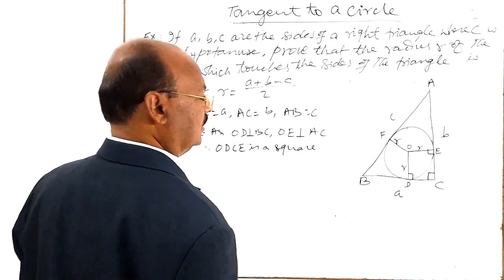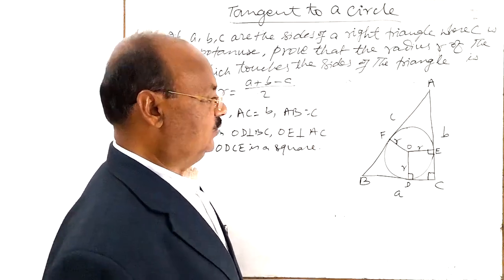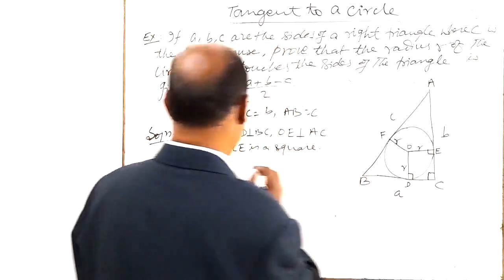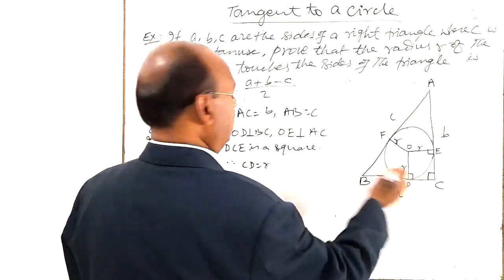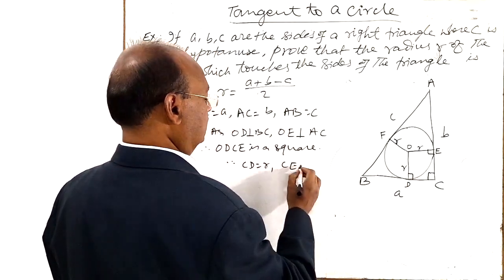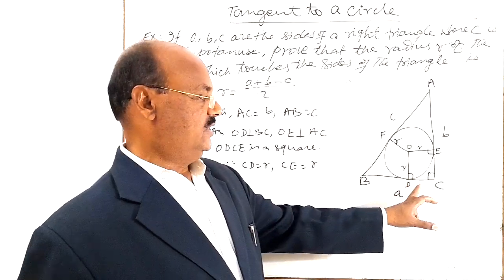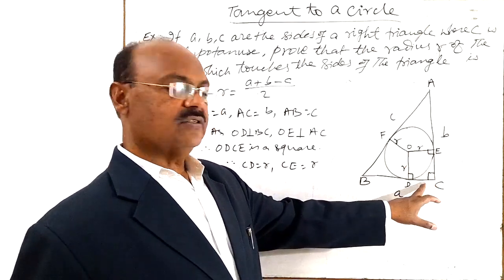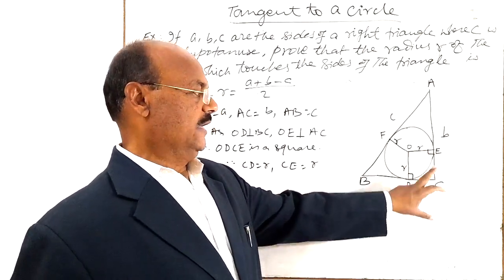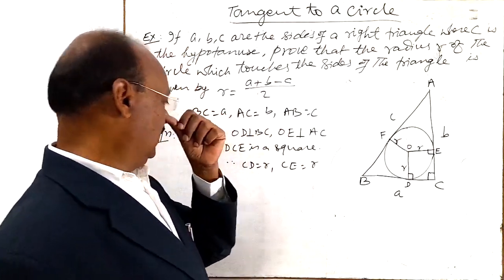And we know that length of all the four sides in a square are equal. So therefore we can write CD is equal to R as well as CE, this is also R. Because DC is the side opposite to OE. So opposite sides of a square are equal. In fact, all the four sides are equal. So CE is also equal to R, correct?